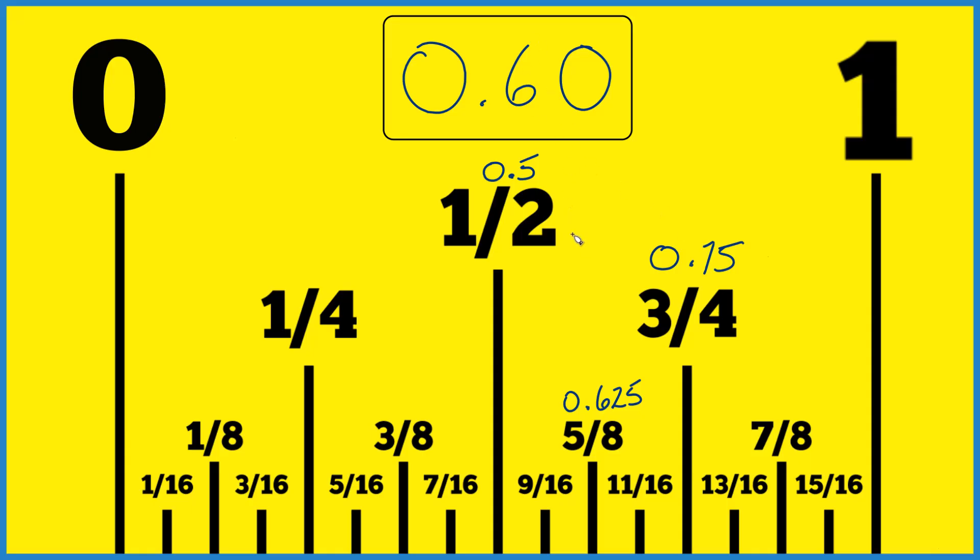So now I know it's between 1 half and 3 fourths. If I divide 5 by 8, I get 0.625. So I'm getting pretty close. I have 0.60 here, 0.625.